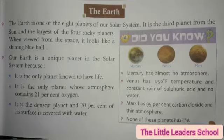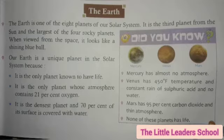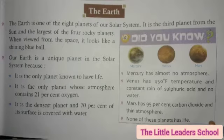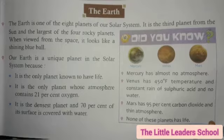अब corner में देखें, आपको 3 ग्रहों के बारे में बताया गया है: Mercury, Venus और Mars. Mercury has almost no atmosphere — Mercury यानि बुध ग्रह पर वायुमंडल नहीं है. Venus has 450 degree temperature and constant rain of sulfuric acid and no water — जो शुक्र ग्रह, उस पर 450 degree temperature है और वहाँ पर sulfuric acid की निरंतर वर्षा होती रहती है.